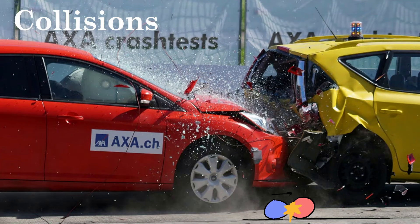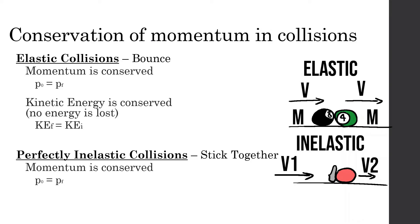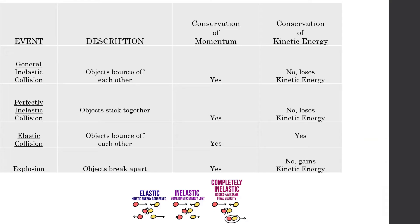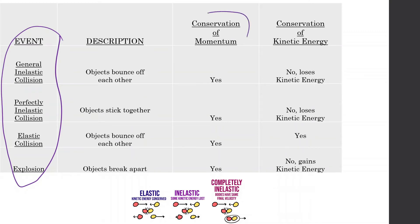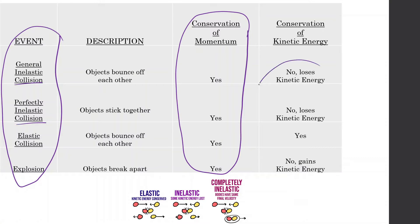Welcome back everybody to Momentum and Impulse with AP Physics 6C. Today we're going to be talking about collisions and more specifically inelastic collisions. So basics: we have elastic collisions and perfectly inelastic collisions. Here are all the different kinds of collisions and explosions. Key things to know: for every kind of collision or explosion, momentum is conserved. Today we're talking about general inelastic collisions and perfectly inelastic collisions where kinetic energy is lost.